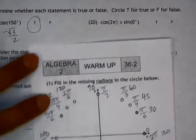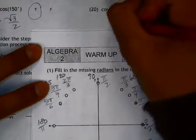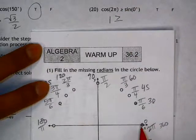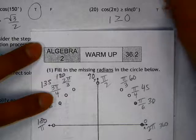All right, and number 20, cosine of 2 pi. Here is positive 1. Greater than or equal to sine of 0, degrees of 0. 1 is greater than 0, and that is true.